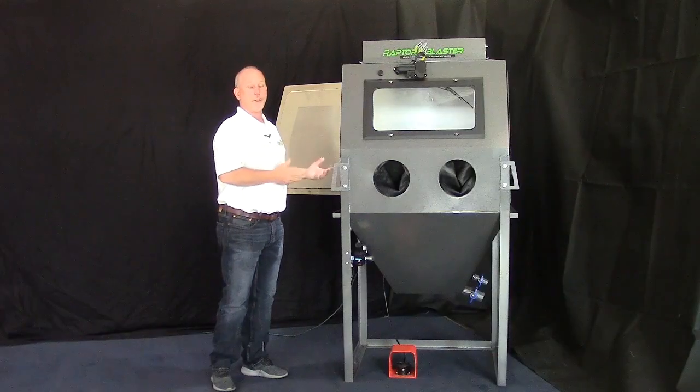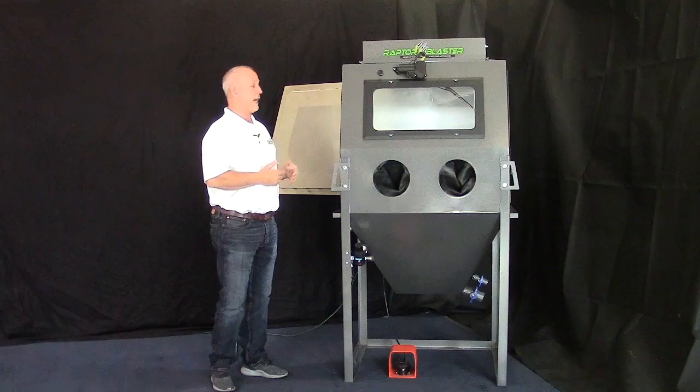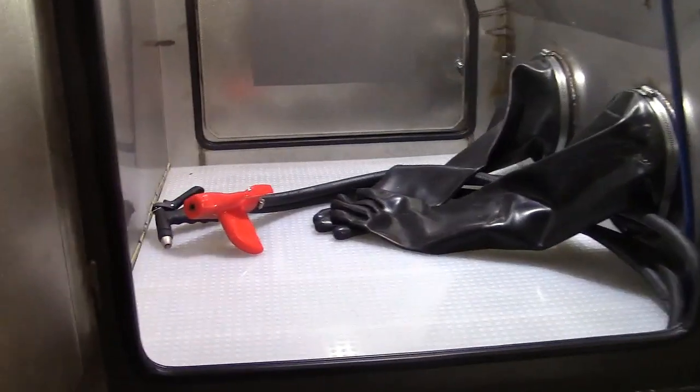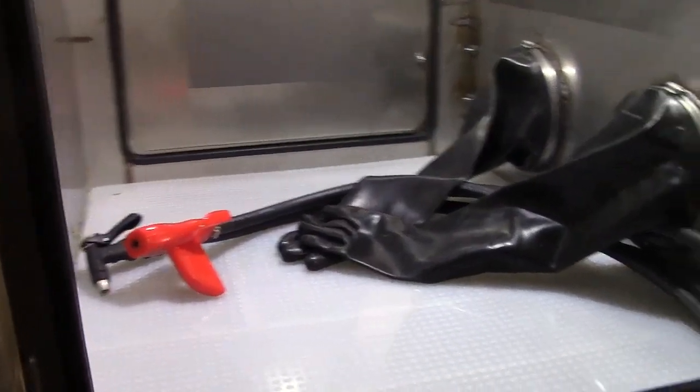The name 3630 is in reference to its size. This cabinet is 36 inches wide by 30 inches deep by about 36 inches tall, so the interior portion will hold a pretty good size part.